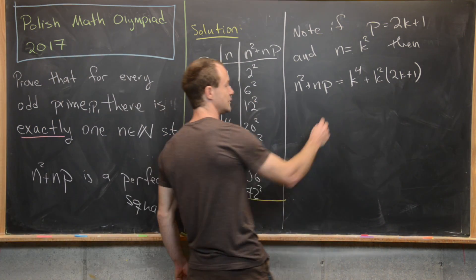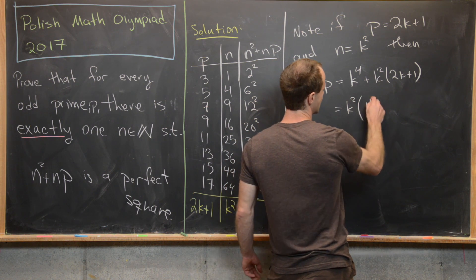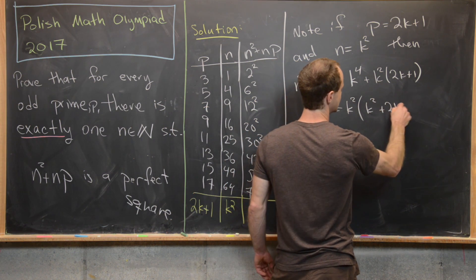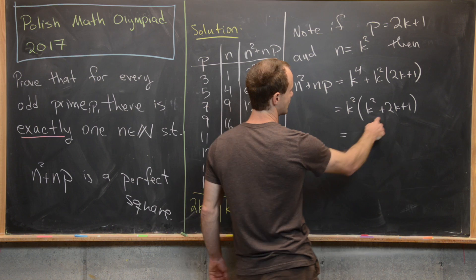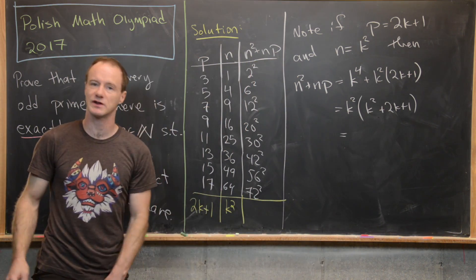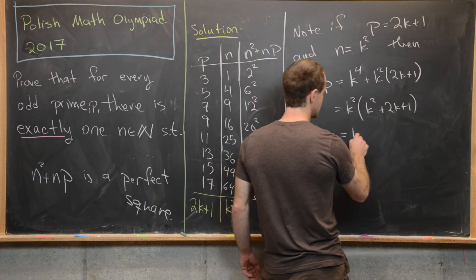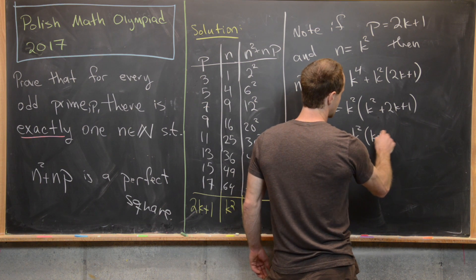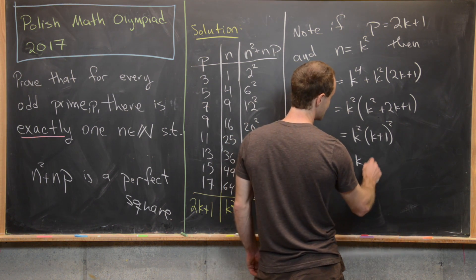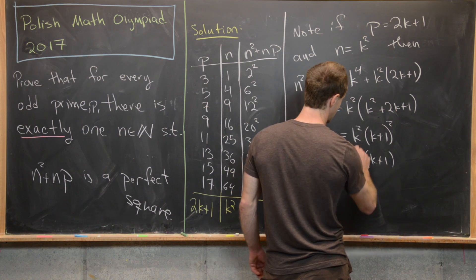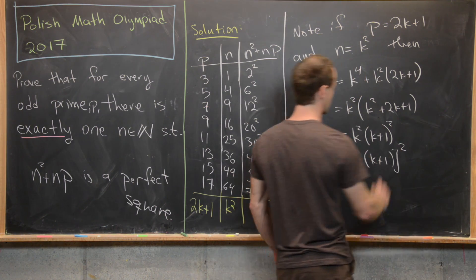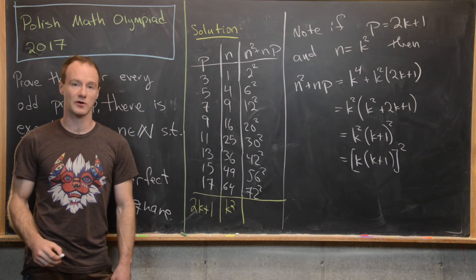The next thing that I want to do is factor k squared out of this whole thing, and notice that I'm left with k squared plus 2k plus 1. But now notice that this k squared plus 2k plus 1 nicely factors. So here we have k squared times k plus 1 quantity squared, so here we have k times k plus 1 and then all of that squared. So in other words, we have a perfect square.